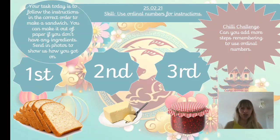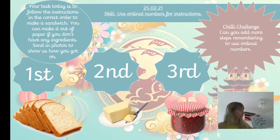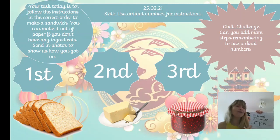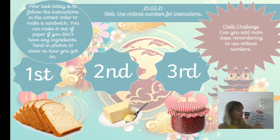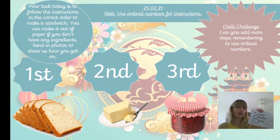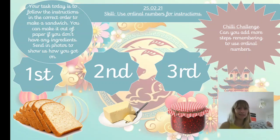As a chilli challenge, you might want to add more steps, remembering to use our ordinal numbers. So, what do we say after third? First, second, third — fourth! Good. We don't just say 'four', because it's not our birthdays — we say 'fourth'. So we would write that like this: fourth. And then you might write 'add more bread' because you might want to close your sandwich, or you might write that the fourth instruction is to eat your delicious sandwich.